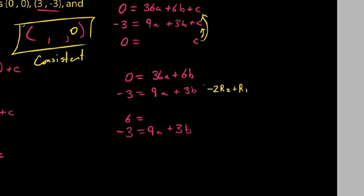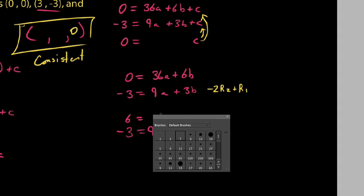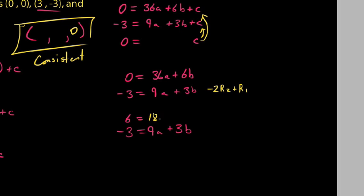The first equation now becomes: -2 times 9a is -18a, and -18a plus 36a is 18a. Then -2 times 3b is -6b, and -6b plus 6b cancels out. We could rearrange these, but the point is we get 6 = 18a.